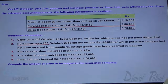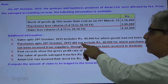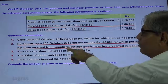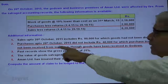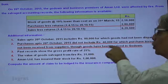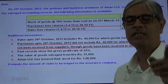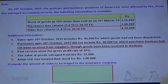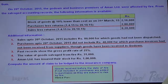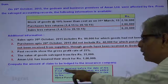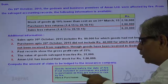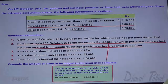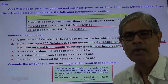Purchases less returns are 2,18,000. Purchases up to 20th October 2015 (the date of fire) did not include 40,000, because the purchase invoice had not been received from the supplier, though the goods were received in the godown. The purchase invoice was not received, so it was not recorded as purchases — but the goods were received, so they were subject to fire. Goods received before the date of fire, if not included in purchases, are added to the purchases, as they are subject to the risk of fire. Hence the purchases to be recorded are 2,18,000 plus 40,000, to be recorded in the memorandum trading account.